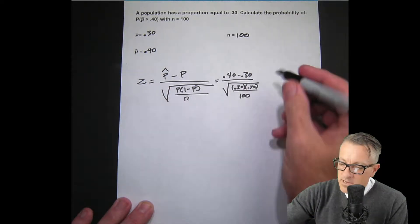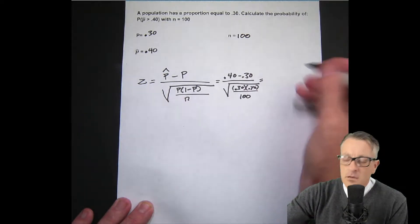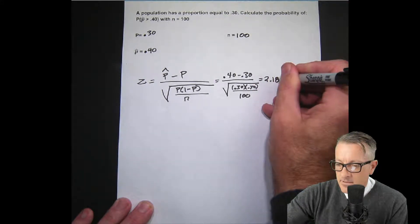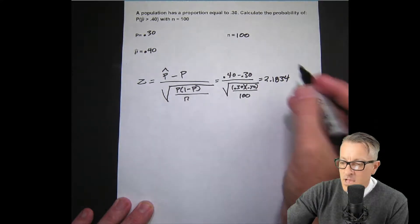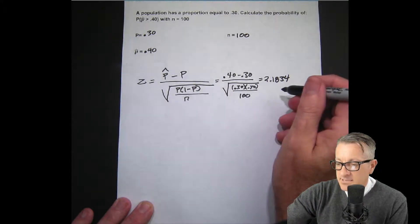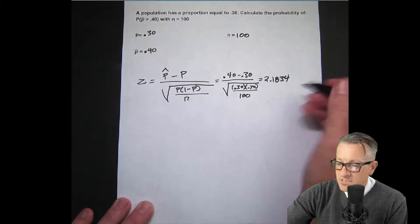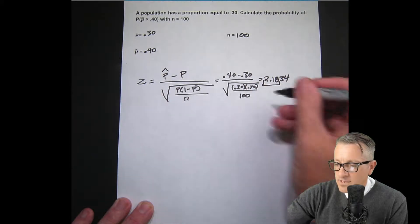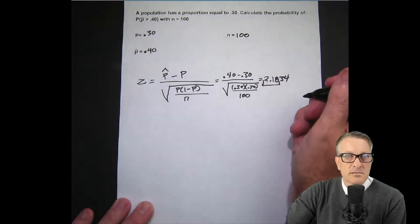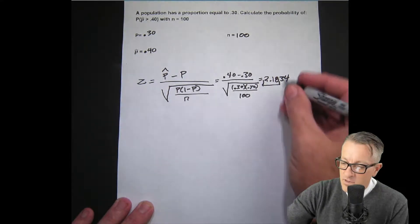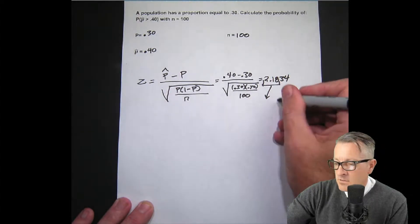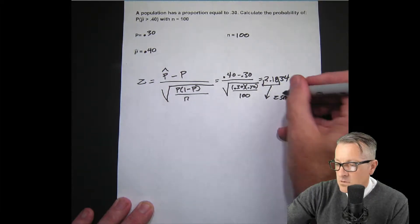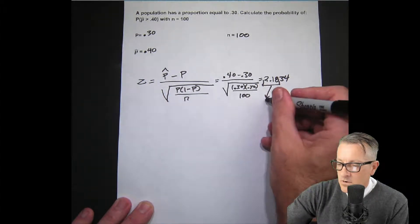Then we work this out and we end up getting 2.1834. We could go on forever, but my Z table only goes out two decimal places. So for our example, 2.18 is a good answer for what we're looking for. This is our Z score. Now we're going to go down and find the area on the table, which is the area under the curve.